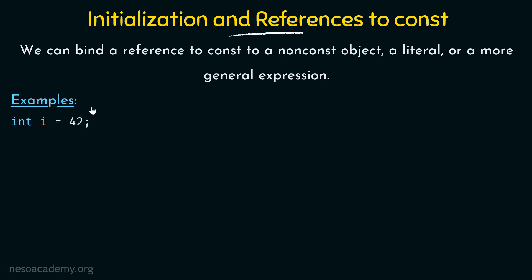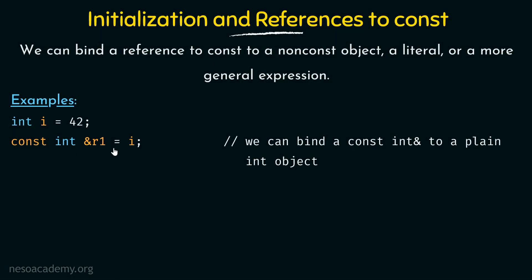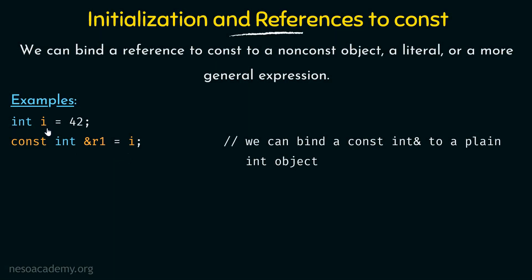Here I am declaring a normal variable i of the type integer initialized to 42. Then I am defining a reference to const called r1 of type integer, and I am binding it to i, which is a plain non-const integer object. As we said, we can bind references to const to non-const objects — binding a const integer reference to a plain int object is completely valid.